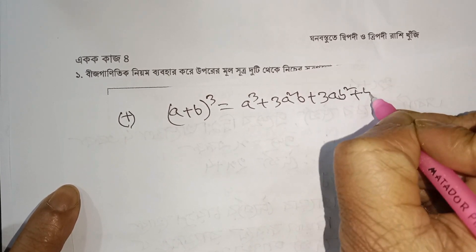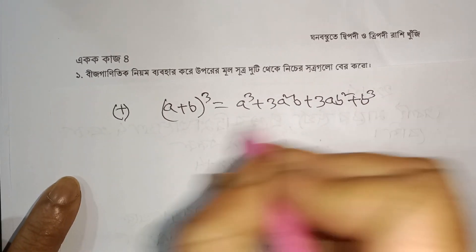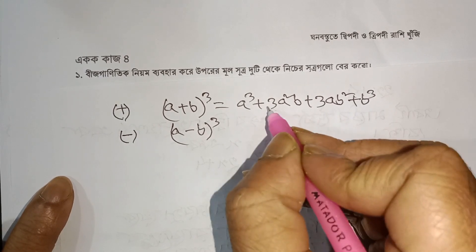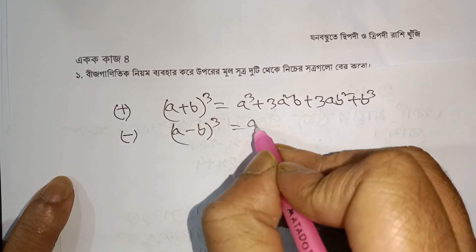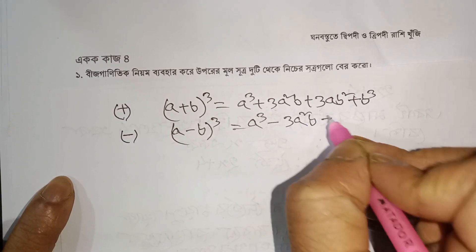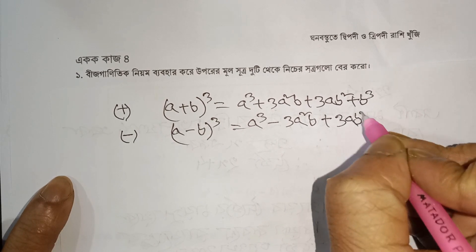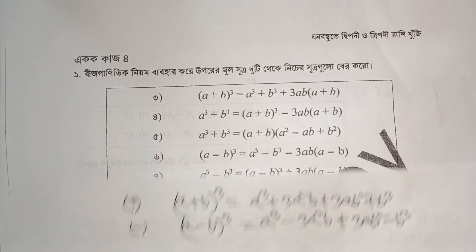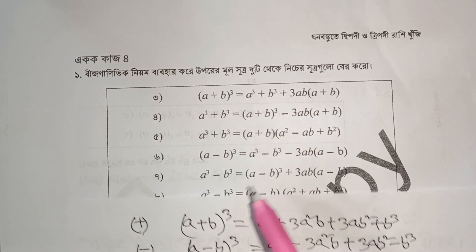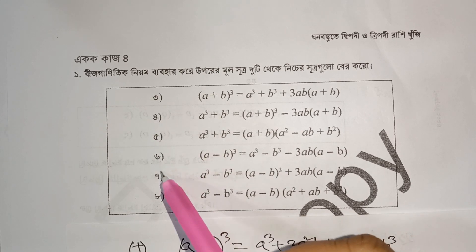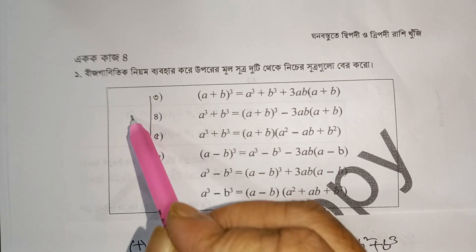a b square plus b cube minus 3a square b plus 3a b square minus b cube. 2a square b plus a square b square. 3a square plus a square root.